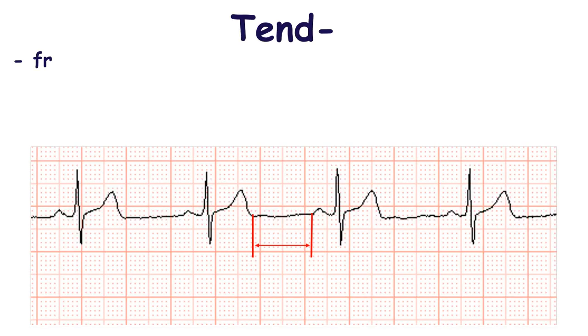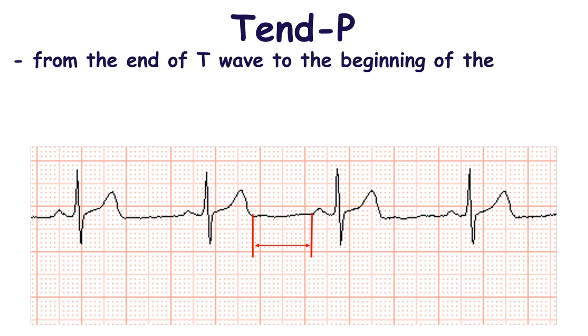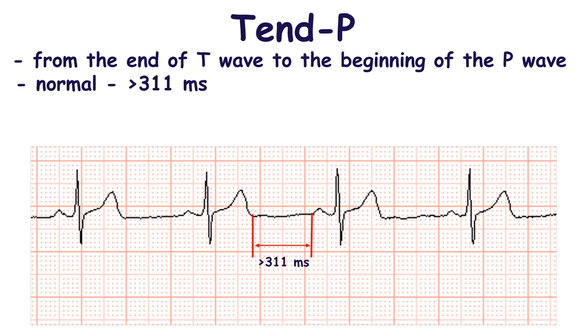The TpP interval is measured from the end of the T wave to the beginning of the P wave. Normally, TpP should exceed 311 ms.